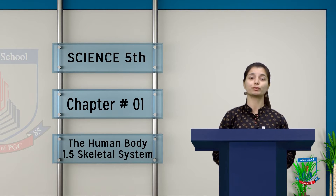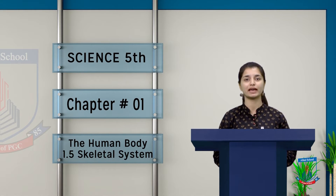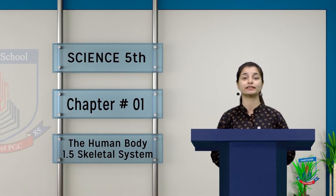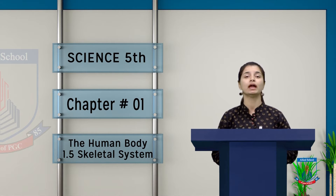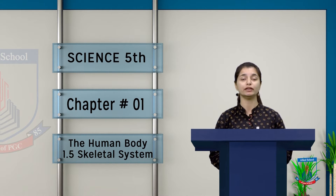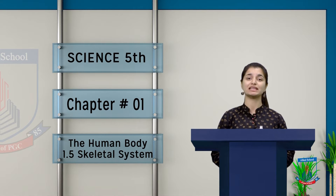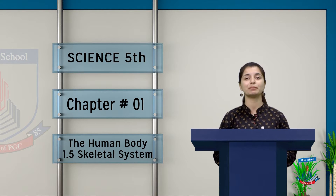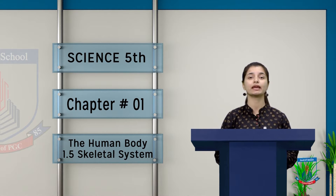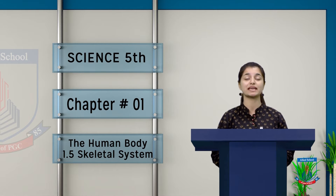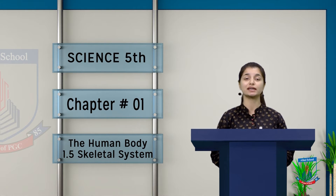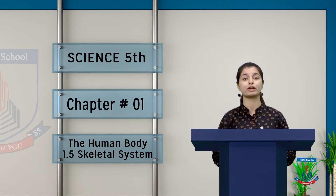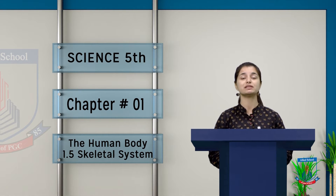Assalamualaikum grade 5, I hope that you are all good with a fresh mind today. We are doing your book chapter number 1 and I am your science teacher Saba. Our agenda today is that we are going to talk about 1.5 skeletal system. So far we have discussed the circulatory system, nervous system, respiratory system, and muscular system. Today we will talk about the skeletal system.